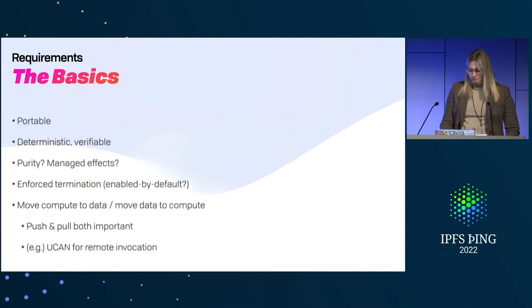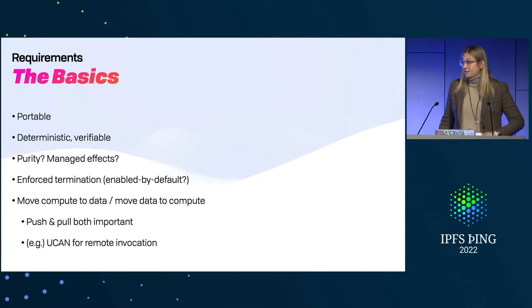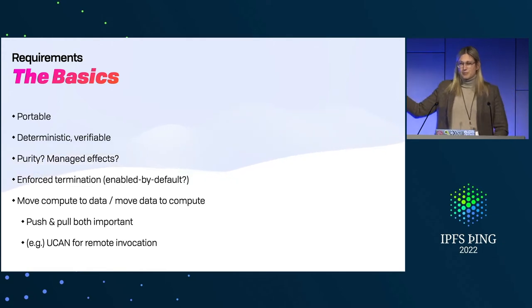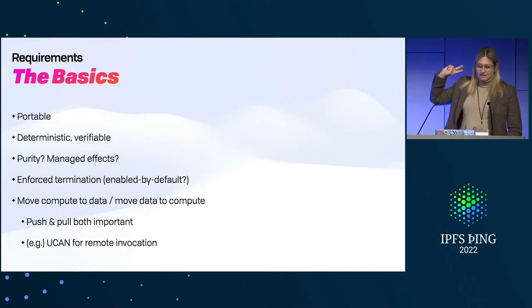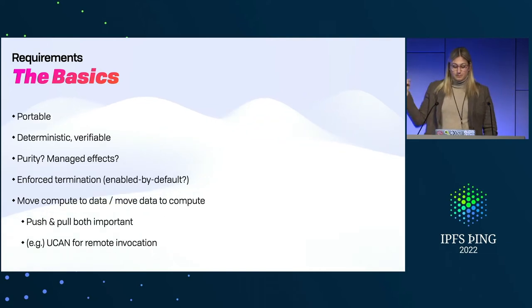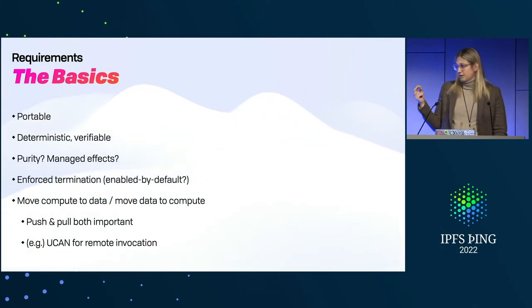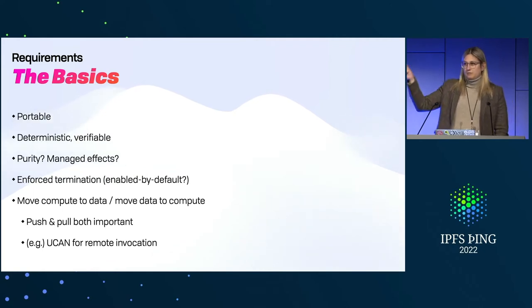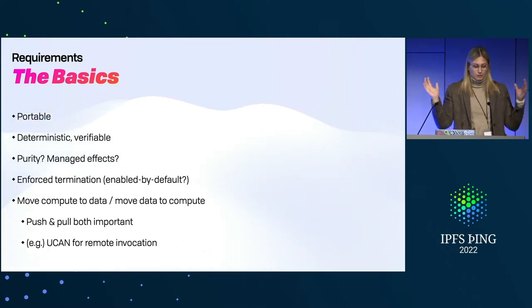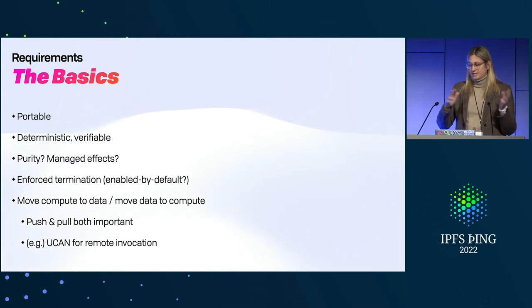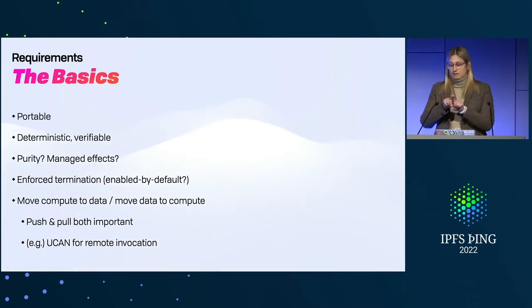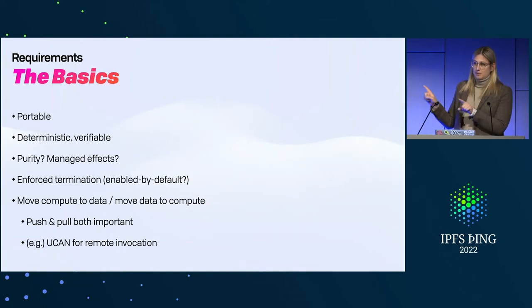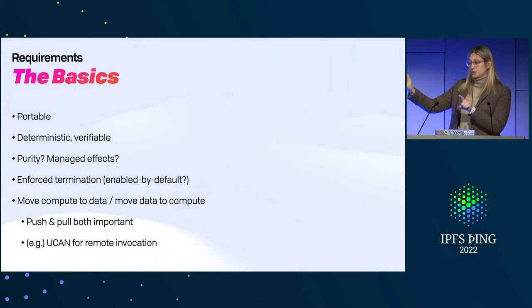So what do we actually need this thing to do? It definitely needs to be portable, deterministic, and probably verifiable by default — with the ability to turn that on and off. Open questions: does this need to be completely pure, does it do managed effects? If I'm running completely untrusted code, I probably have it really locked down. If I'm running something from within my team, maybe I can give it more power. The nice thing is WASM — and WASI in particular — have really nice interfaces for doing these things, and maybe that ends up exposed in a manifest based on what resources we're going to plug in.